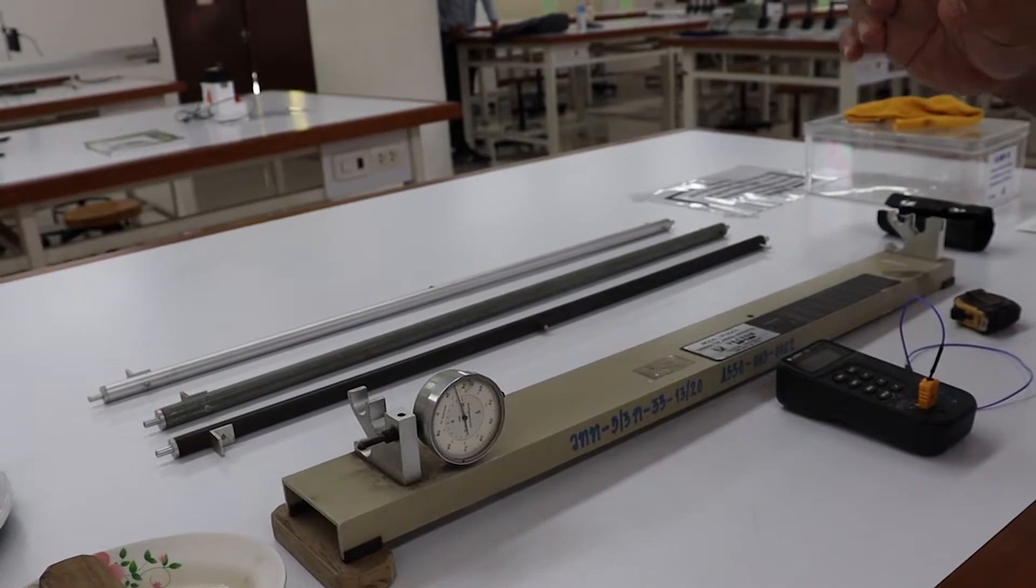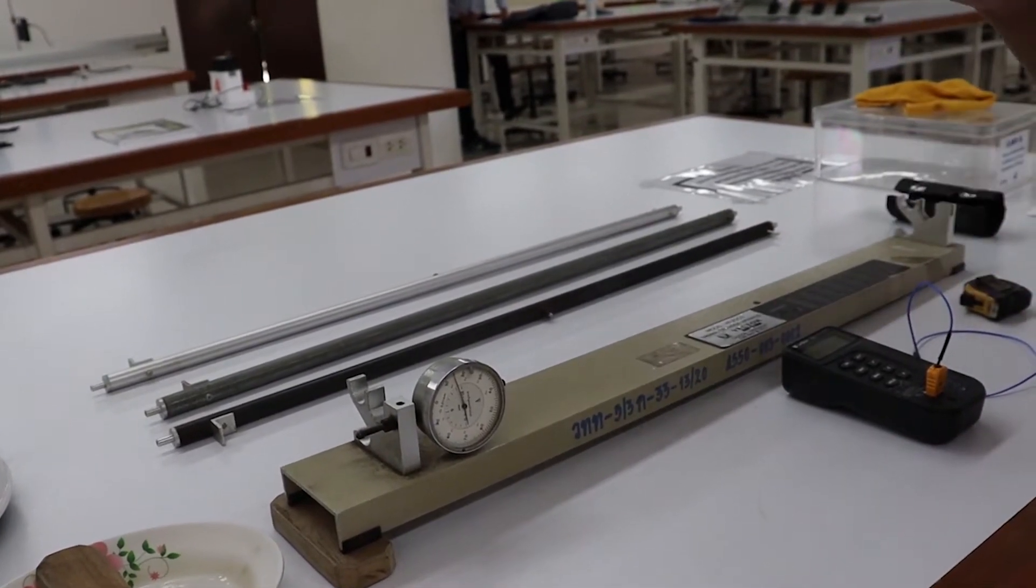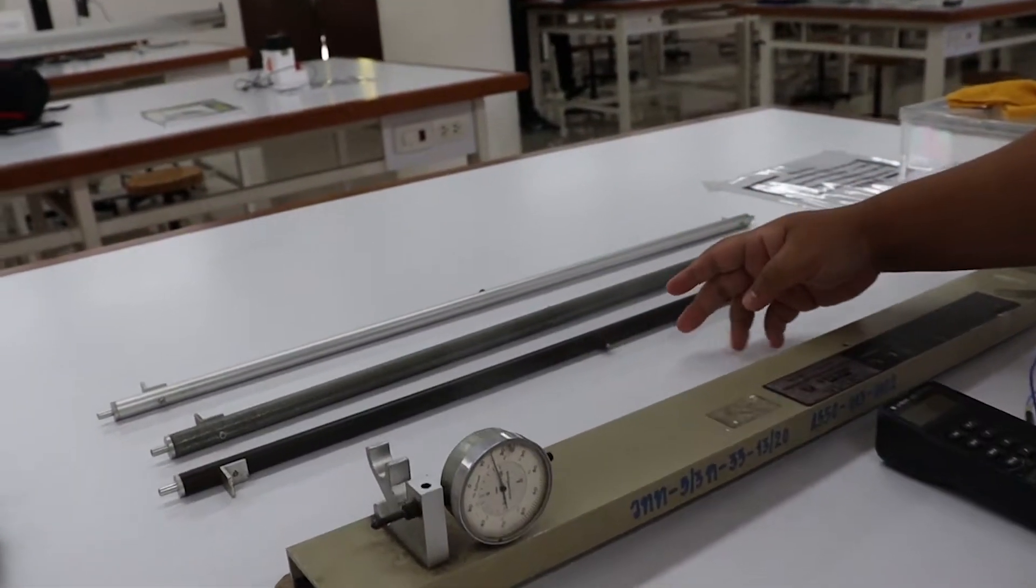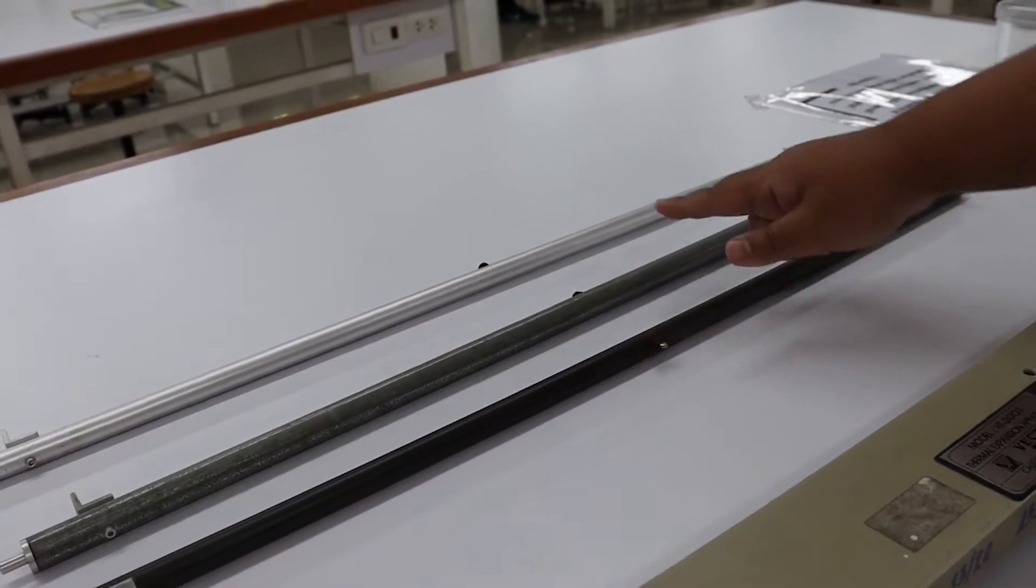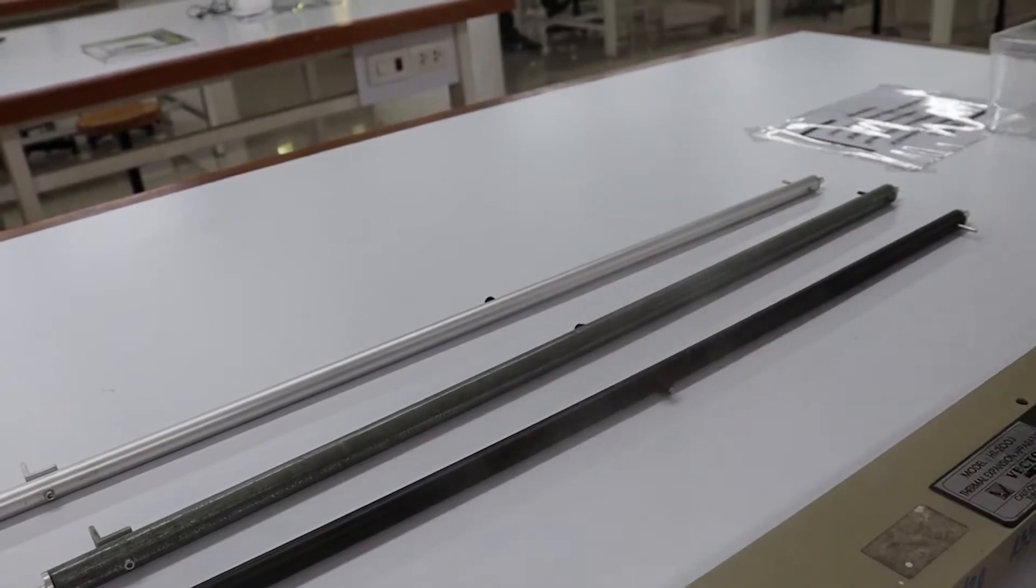There are three types of metal that we will measure the coefficient of linear expansion. This is copper, this is iron, and this is aluminum.